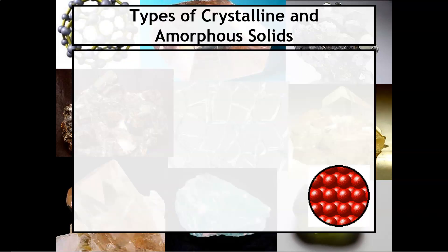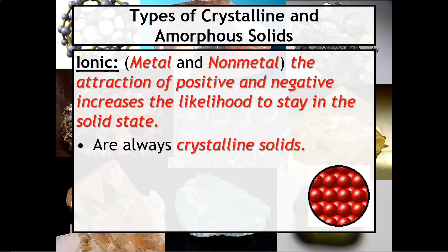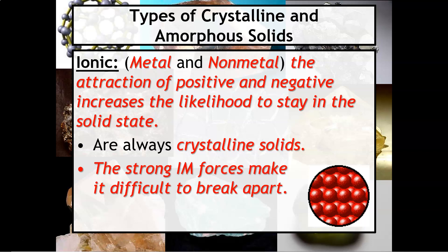Now there are types of crystalline and amorphous solids. The first is ionic, which is the one you're most familiar with. Ionic compounds contain both a metal and a nonmetal, and it is the attraction of both the positive and negative ions within the crystal lattice that increases the likelihood these substances will be in the solid state. Ionic substances are always going to be crystalline solids, ultimately because of the strong intermolecular forces of attraction that make it very difficult for the solid to break apart.